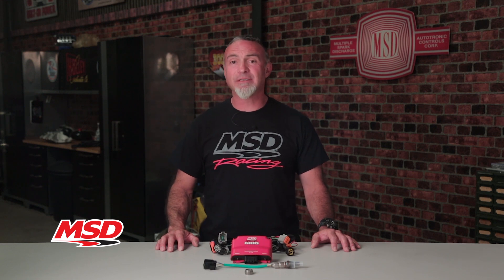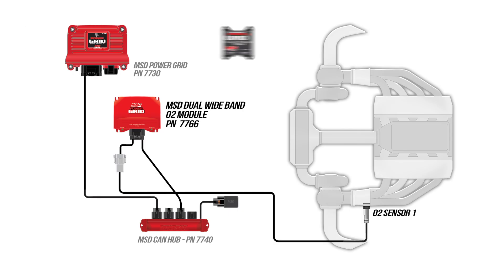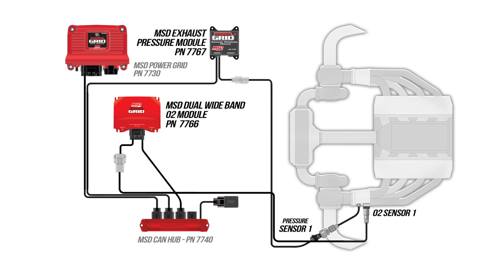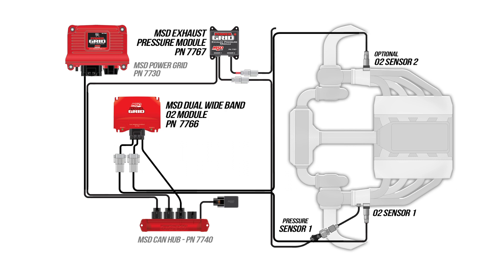Since exhaust gas pressure offsets the lambda measurement of any wide band O2 sensor, MSD's exhaust pressure module will compensate for the variance in exhaust back pressure, giving you accurate AFR readings in turbocharged applications. Just as with the wide band O2 sensor module, adding a second exhaust pressure sensor allows accurate AFR monitoring for both cylinder banks.